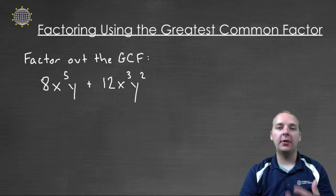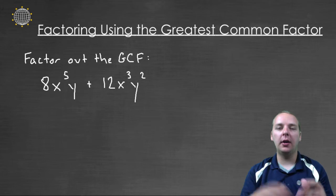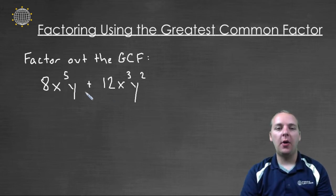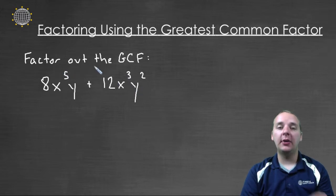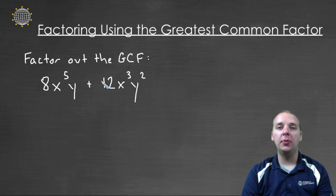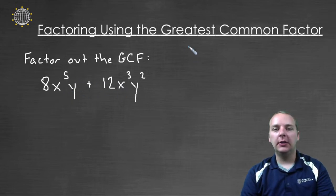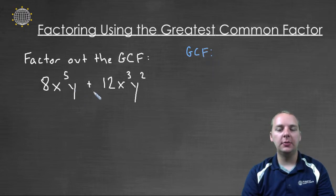One technique that we have to factor polynomials, or write a polynomial as a product, is to use something called the greatest common factor of all the terms in your polynomial. Here I've got a polynomial: eight x to the fifth times y, plus twelve x cubed times y squared, and I want to factor out the greatest common factor of these two monomials. Let's start over here on the side looking for the GCF of these terms.